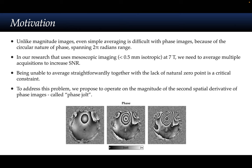Unlike magnitude images, even simple averaging is difficult with phase images because of the circular nature of phase values. In our research that uses mesoscopic imaging at 7T, we need to average multiple acquisitions to increase SNR. Therefore, being unable to average straightforwardly, together with the lack of a natural zero point, is a critical constraint for working with phase images. To address this problem, we propose to operate on the magnitude of the second spatial derivative of phase images, and we coined the term 'phase jolt' to describe these images and this contrast.